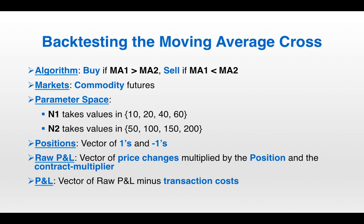Let's backtest the moving average cross. Code up the algorithm — buy if MA1 goes over MA2, sell if it crosses below. We'll do this on commodity futures, which tend to have more of a momentum effect. For the parameter space, specify values for N1 and N2. Positions will be a vector of ones and negative ones, since you're always either long or short. Raw P&L is the vector of price changes multiplied by the position and the contract multiplier. Regular P&L is the raw P&L minus transaction costs.